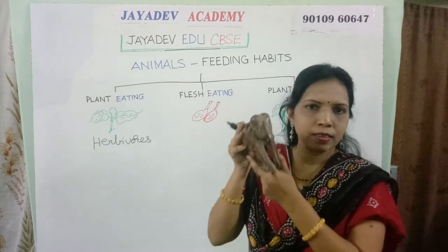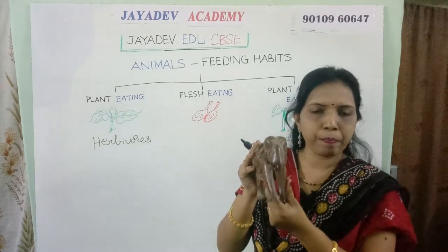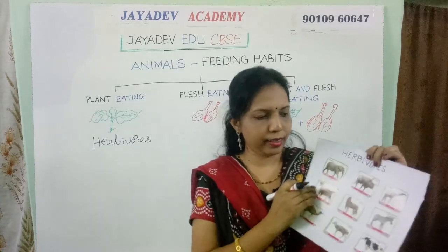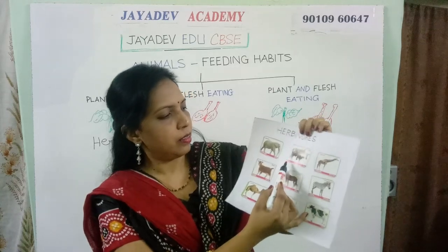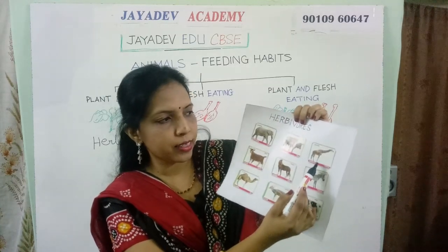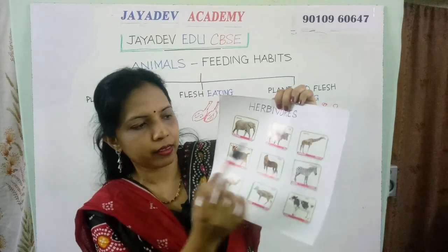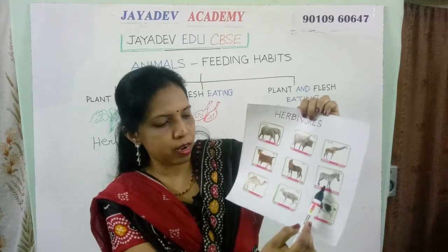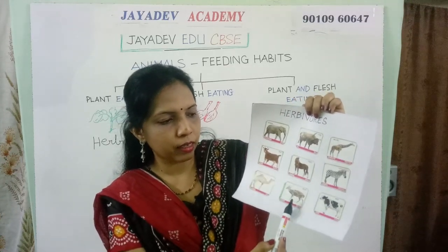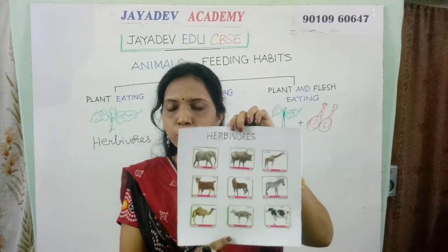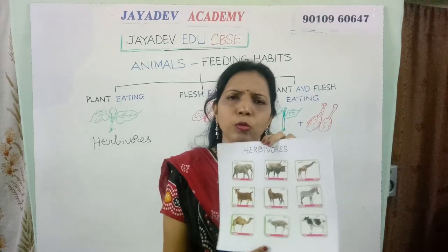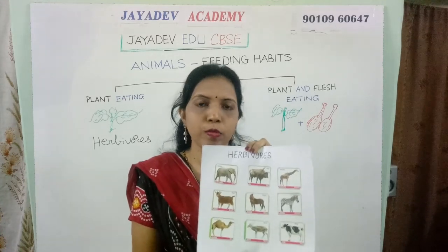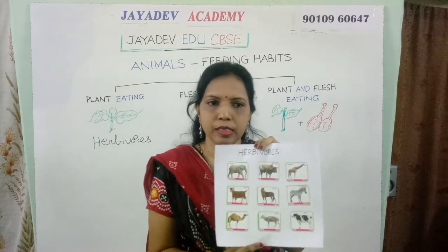For example, the elephant is a herbivorous animal. Here I will show you some herbivorous animals: elephant, ox, giraffe, goat, horse, zebra, camel, deer, and cow. All these are herbivorous animals. They eat only plants or grass, so these animals are called herbivorous animals or plant-eating animals.